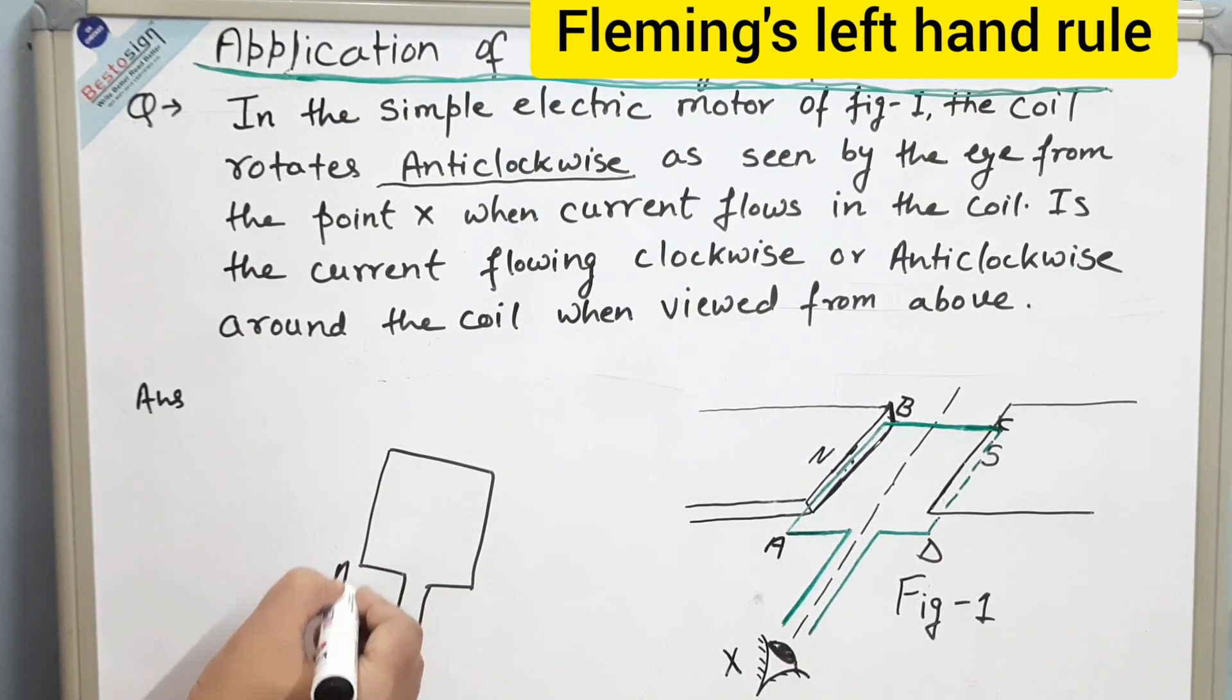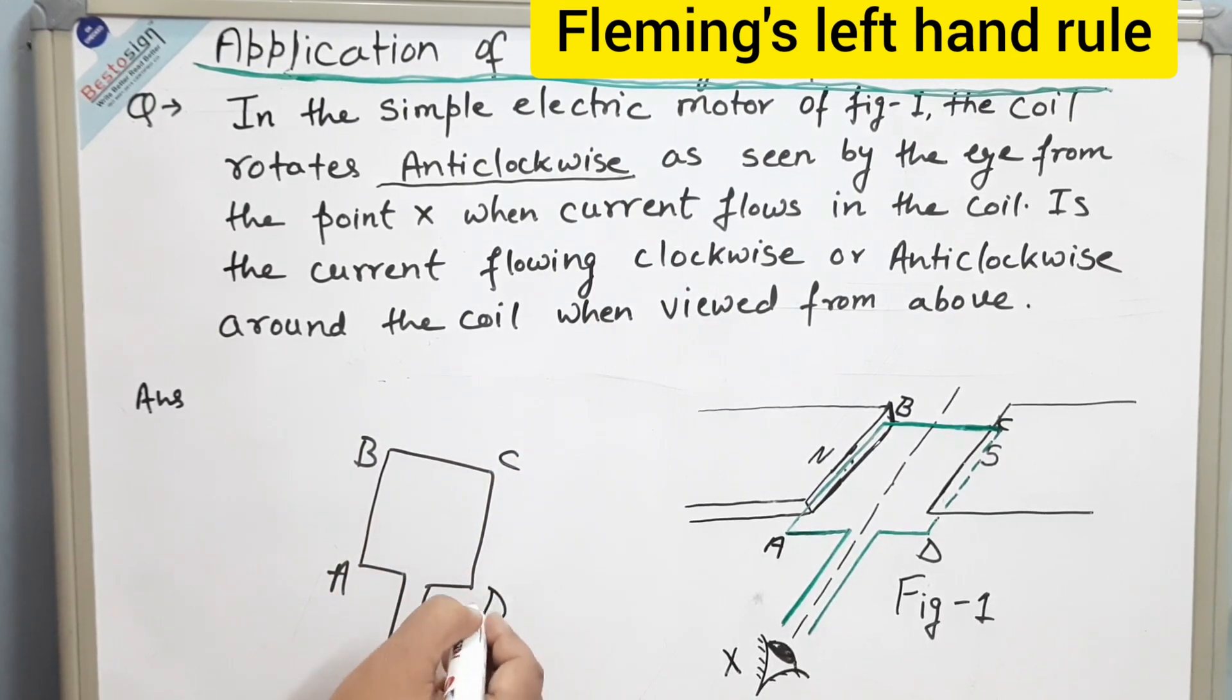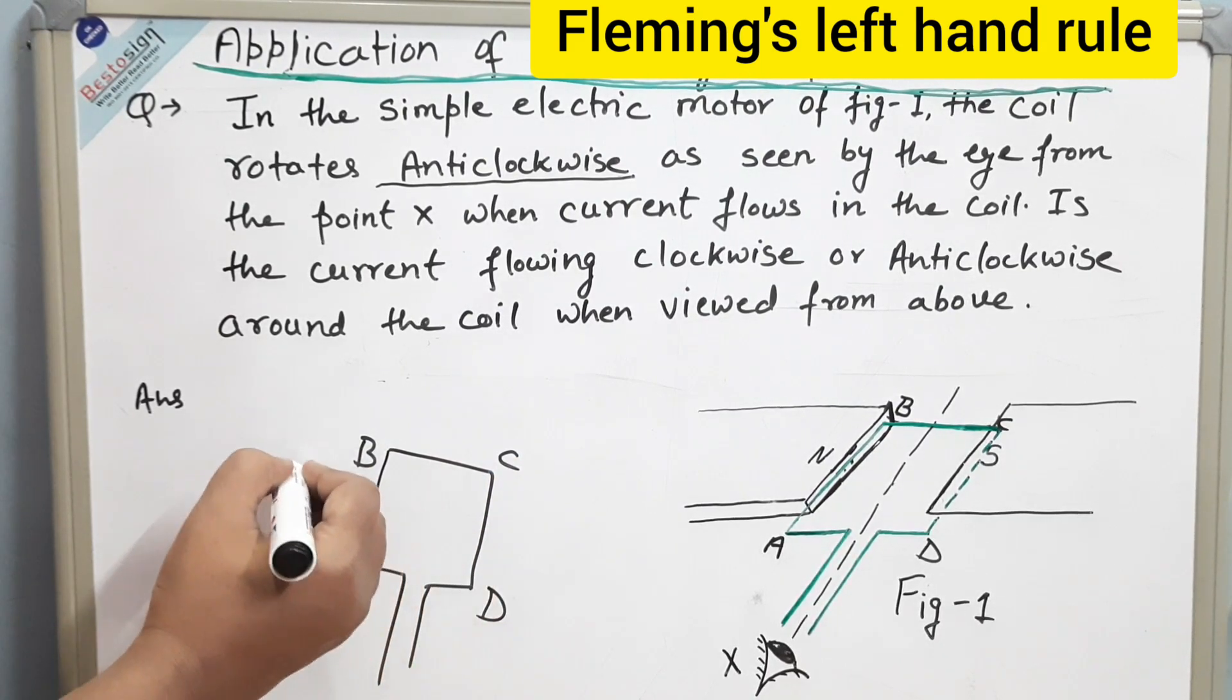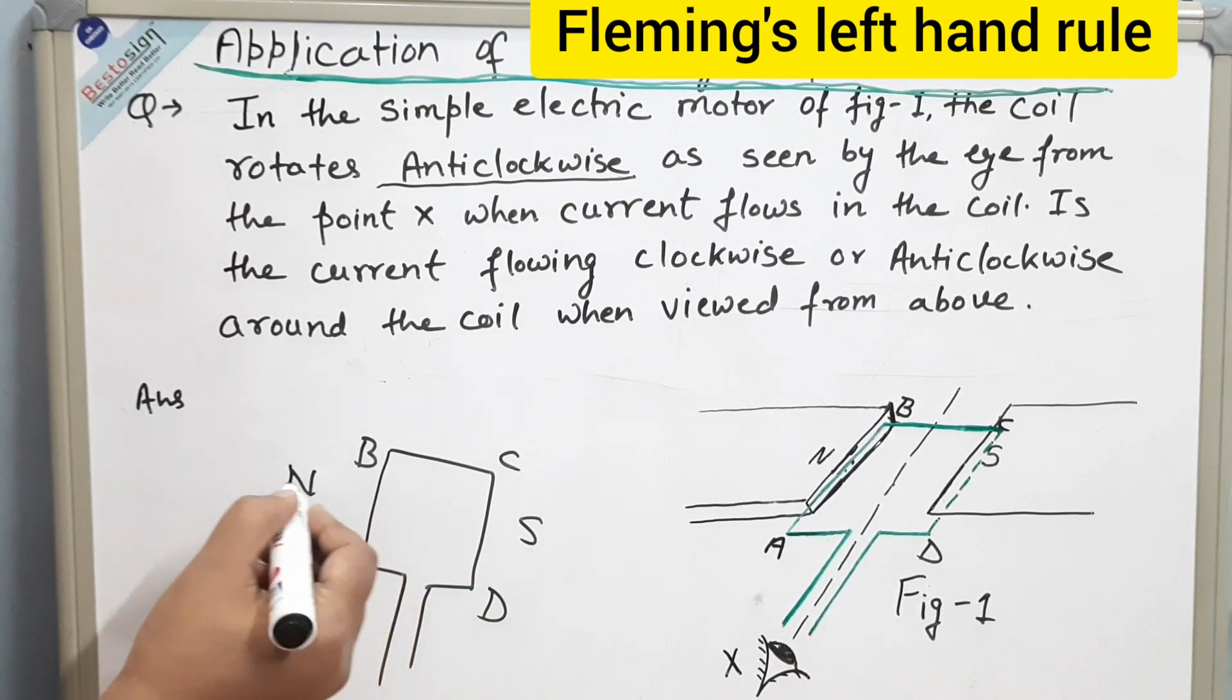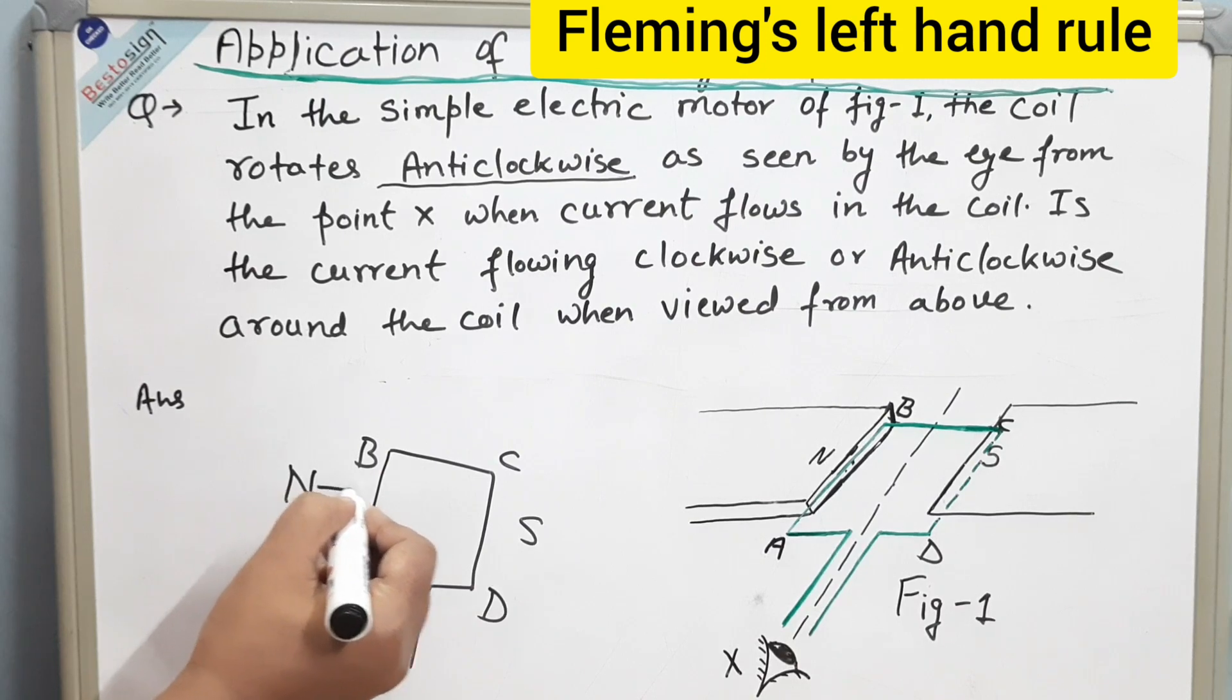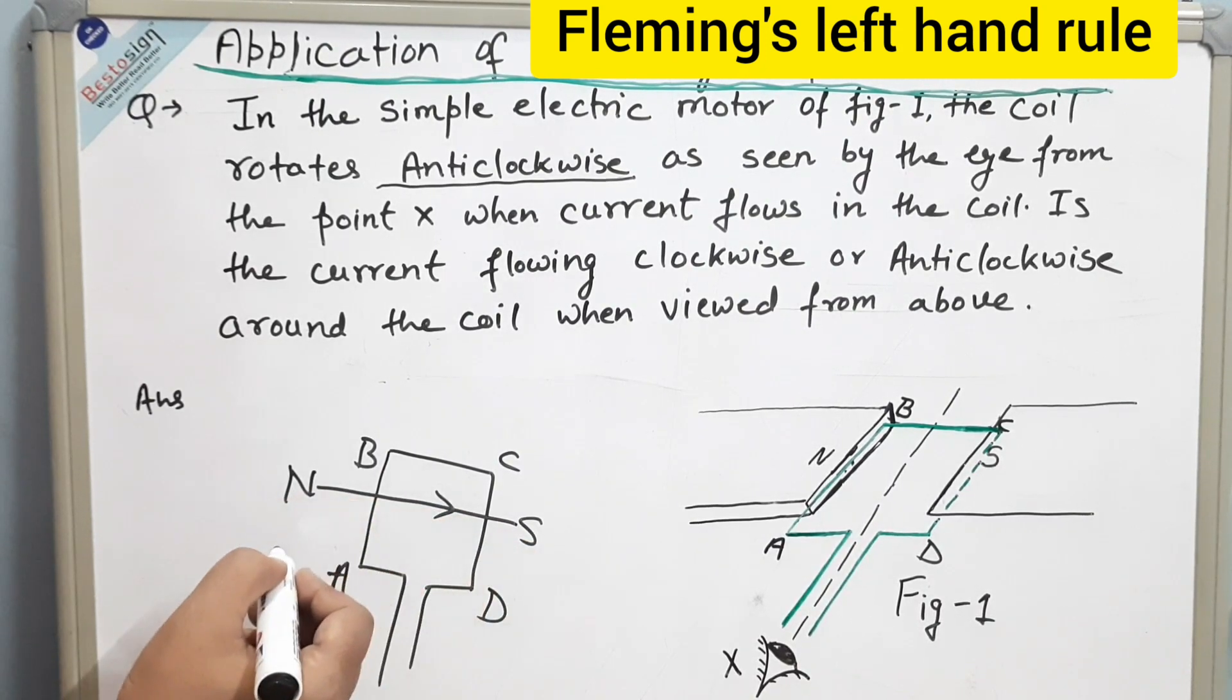This is ab and this is side cd. Here is the north pole and here is the south pole. So, first we will mark the direction of poles that is north to south. The magnetic force will work from north to south.